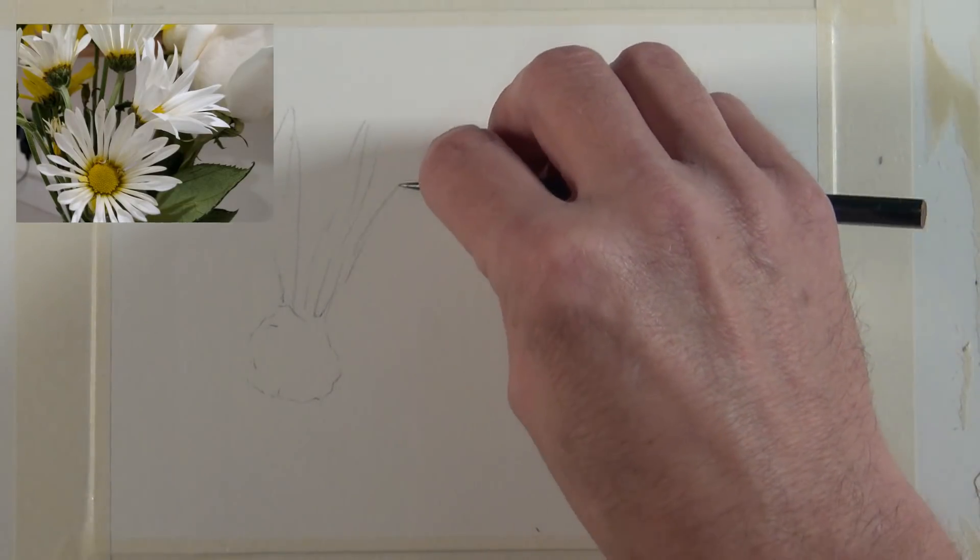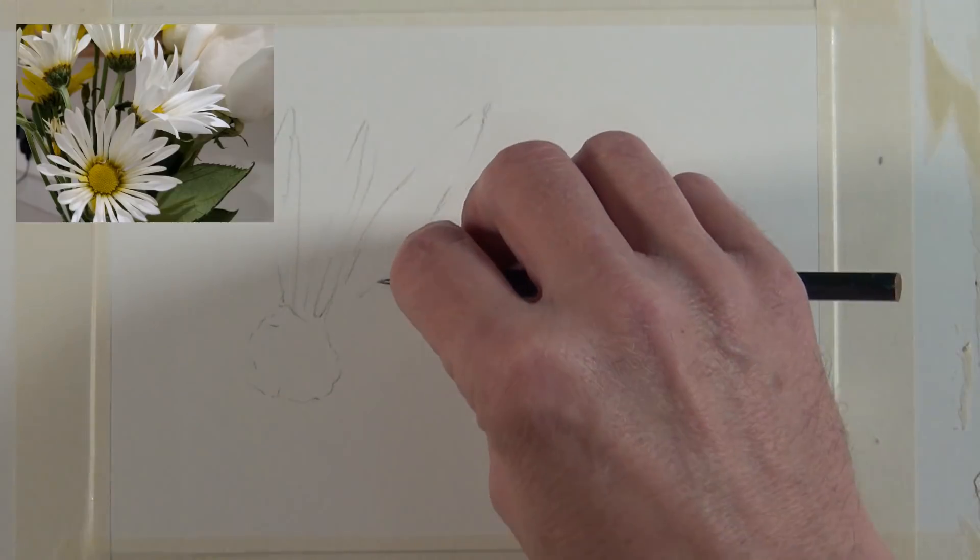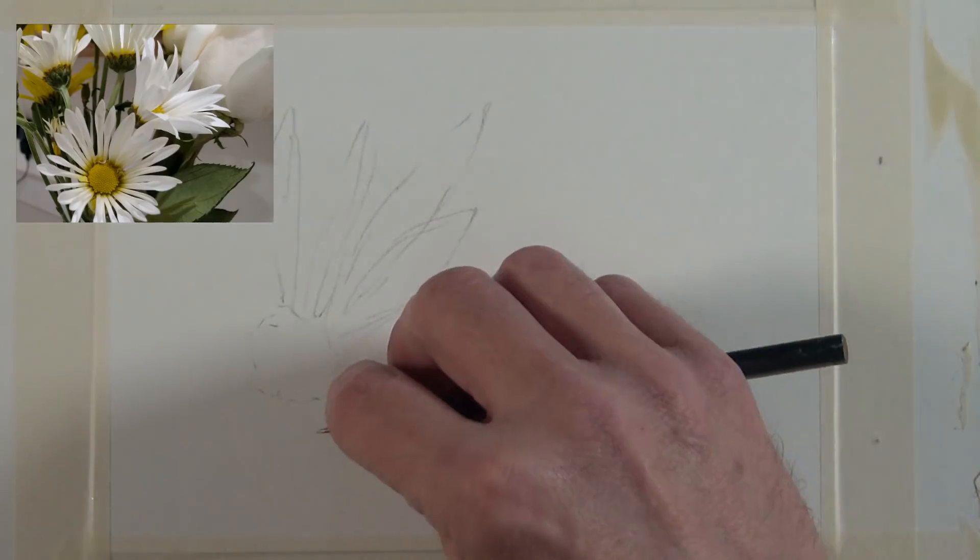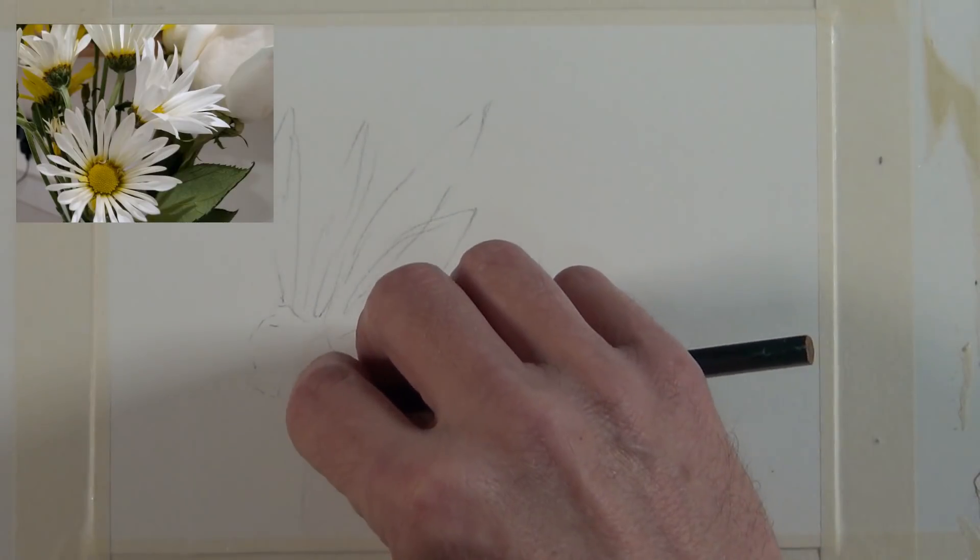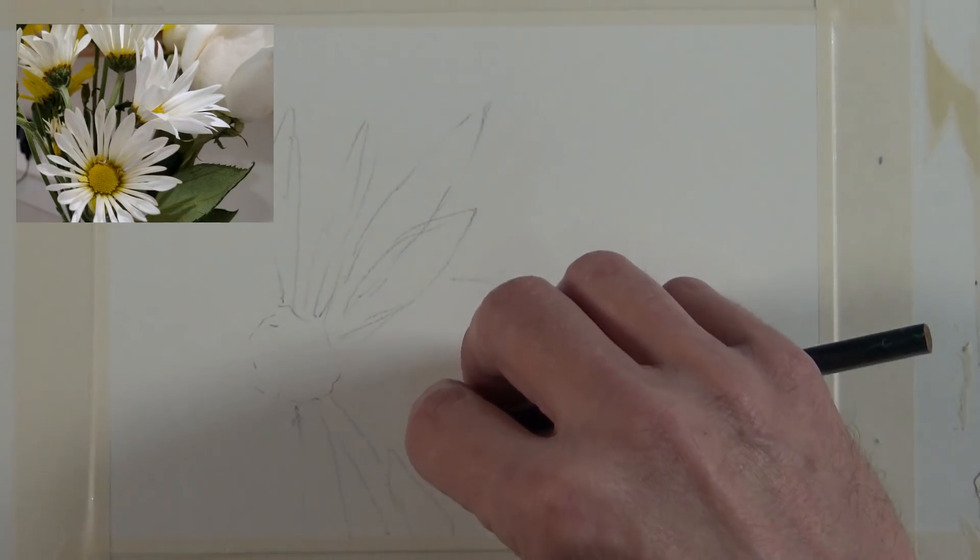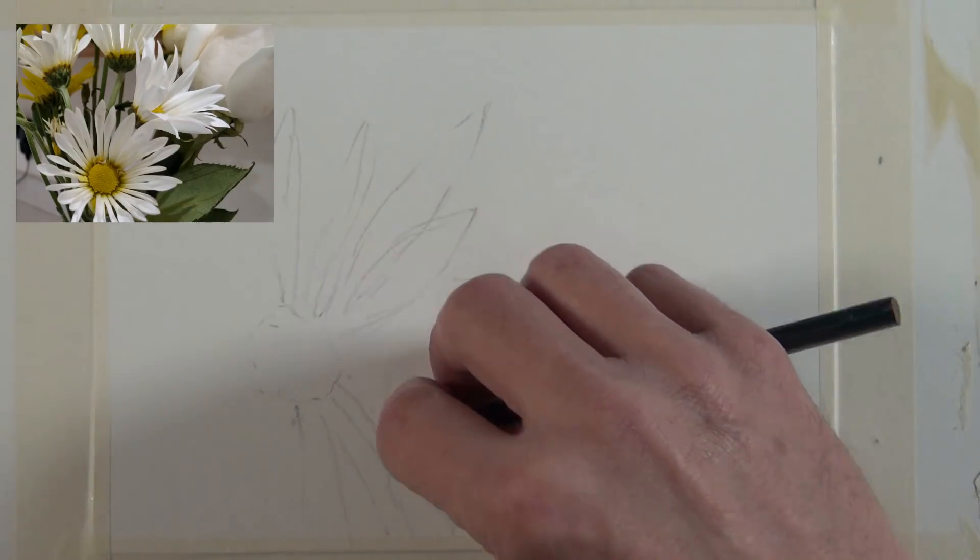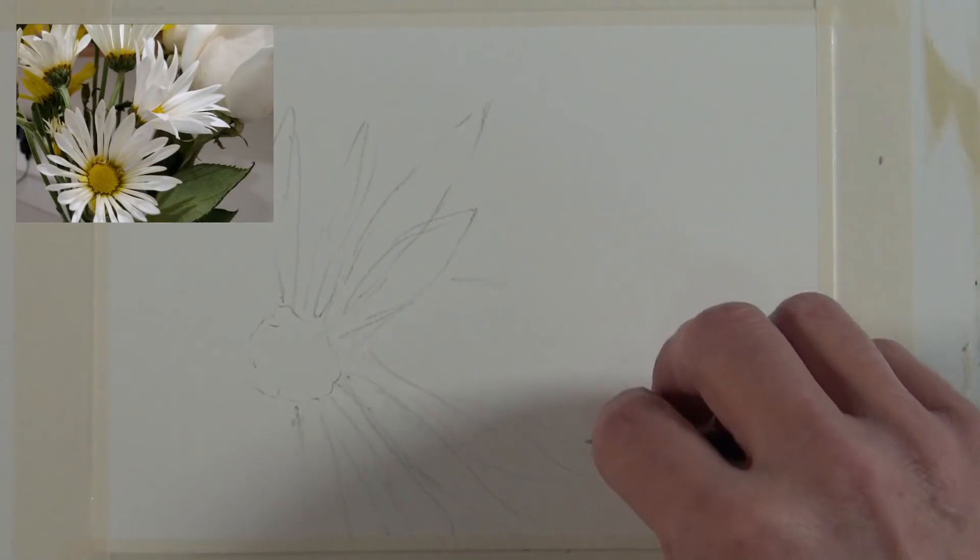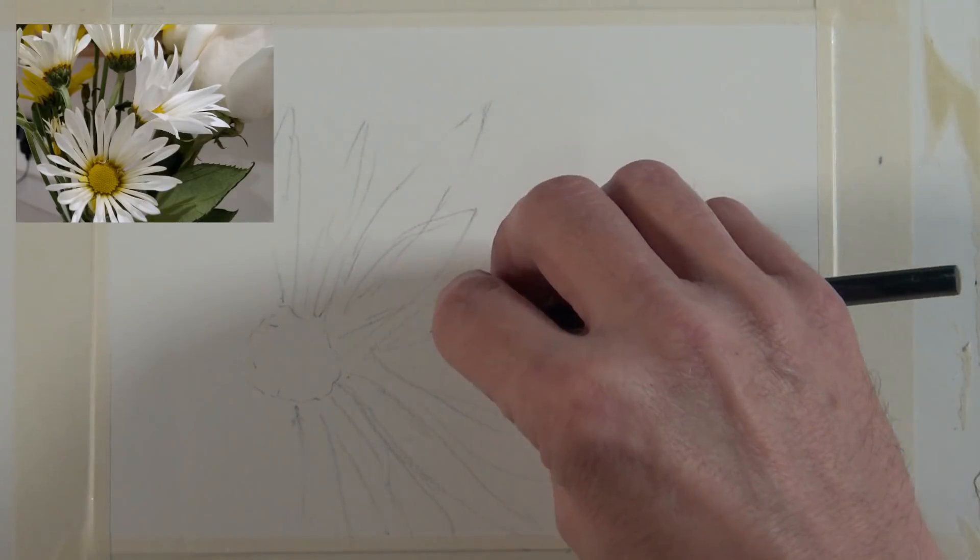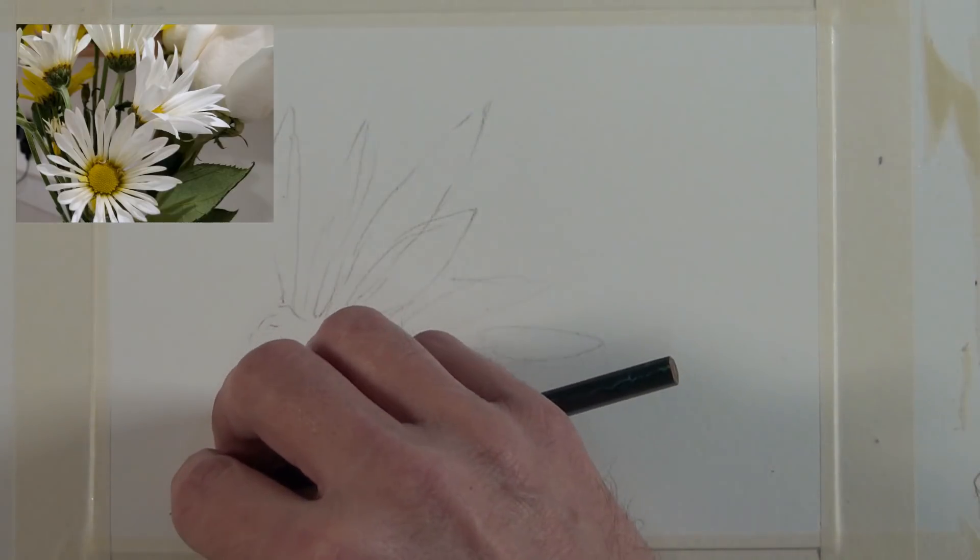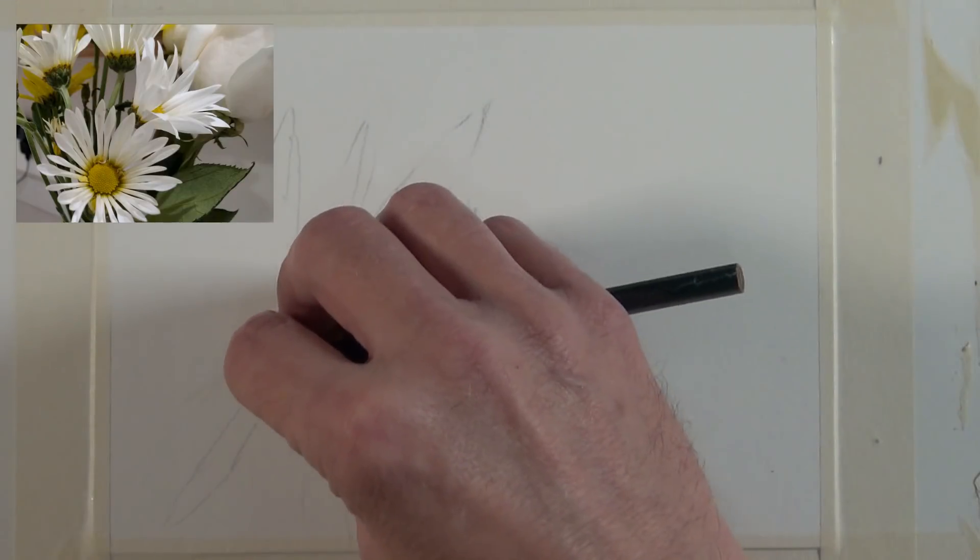And I'm not trying to copy each petal. I'm just trying to interpret what's there and give the suggestion of the shape and the placement of these petals. When I do a painting like this, I always want to run some of the petals and some of the shapes off the edge of the paper. It keeps it from just floating in space...